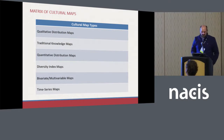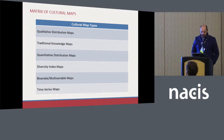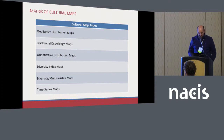Let me talk about categorizing these cultural maps. There are six main types: qualitative distribution maps, traditional knowledge maps, quantitative distribution maps, diversity index maps, bivariate and multivariate maps, and time series maps. I'll say a few words about each of these.